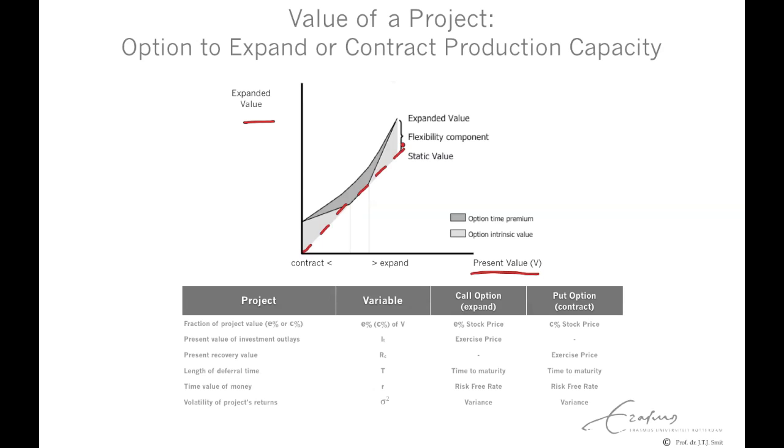Now suppose that next year, we have an option to expand the current production by 50%. In fact, this is similar to a fraction of 50% of a call option with a maturity of one year, where we expand the production.